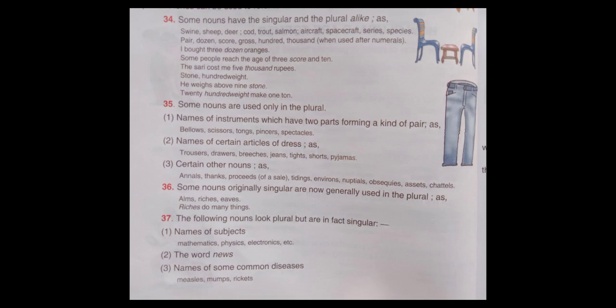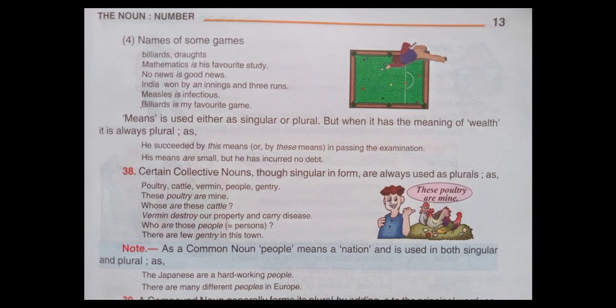The following nouns look plural but are in fact singular: names of subjects like mathematics, physics, electronics; the word news; names of some common diseases like measles, mumps, rickets; names of some games like billiards, draughts. Mathematics is his favorite study. New news is good news. India won by an innings and three runs. Measles is infectious. Billiards is my favorite game.